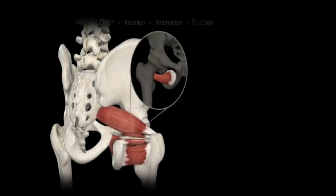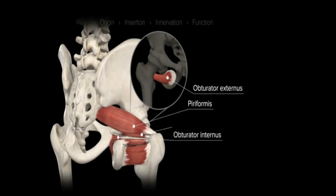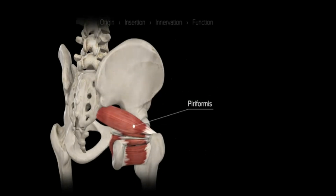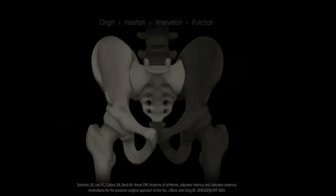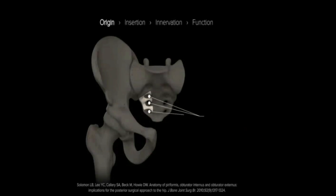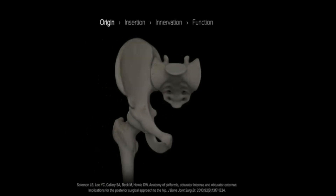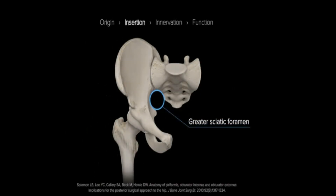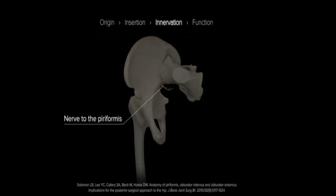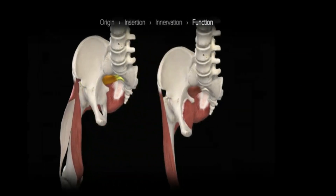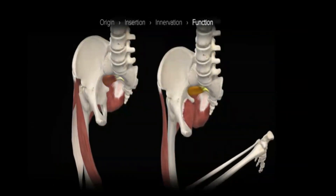Moving now to the deep gluteal muscles, which include the piriformis, obturator externus, obturator internus, gemellus superior, gemellus inferior, and the quadratus femoris. The piriformis is the most superior of the deep gluteal muscles and is named for its pear-like shape. It originates from the anterior sacrum between the 2nd, 3rd, and 4th anterior sacral foramina, passing through the greater sciatic foramen before inserting onto the greater trochanter. It is innervated by the nerve to the piriformis and plays a role in both abduction and external rotation of the hip.